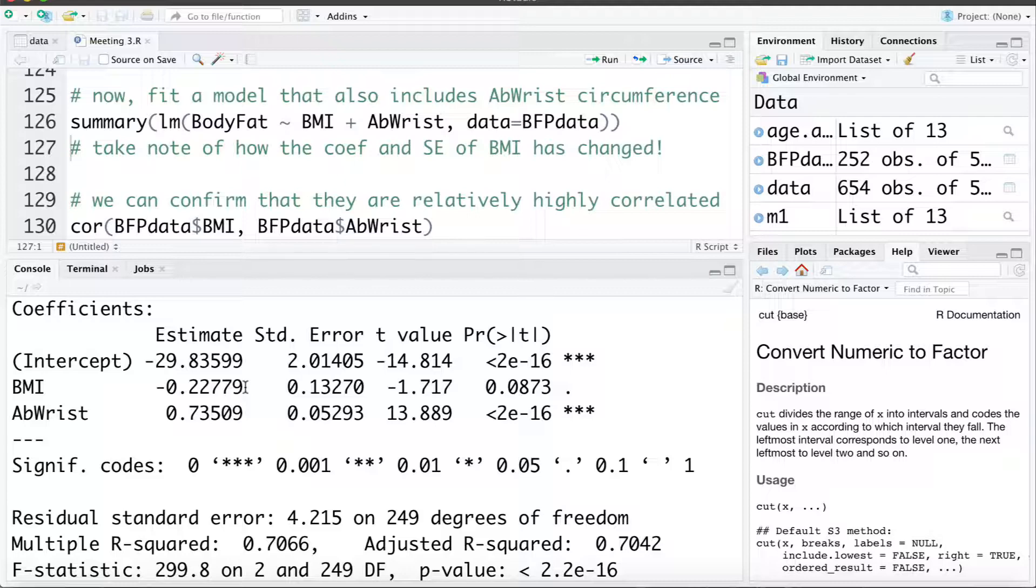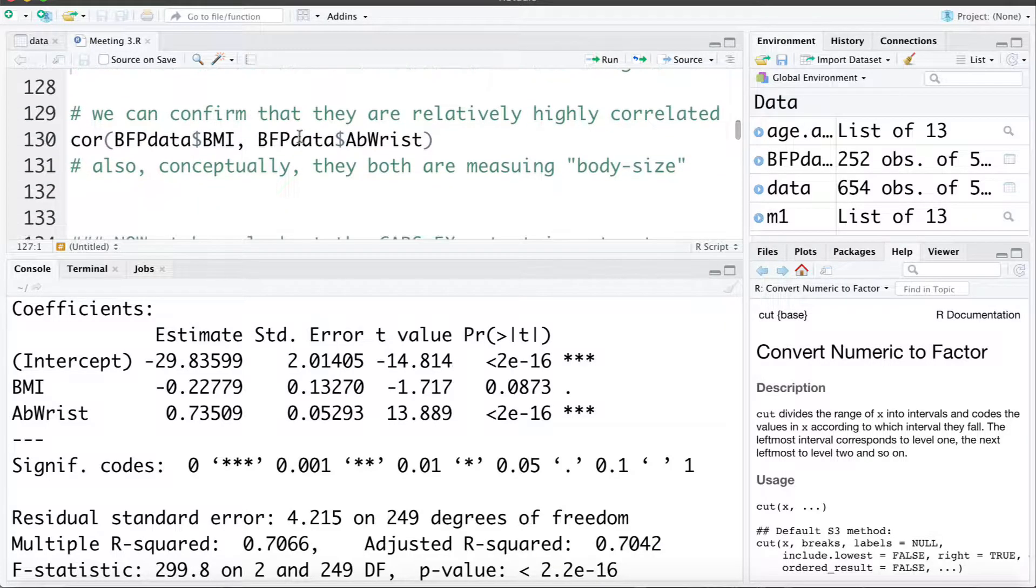So this is how we can see collinearity showing up numerically in a data set. It's important that we don't want to just check these numeric values and see our standard errors inflating, but does it make sense conceptually? And it definitely does for us here. It definitely does make sense conceptually that BMI and abris circumference are measuring the same thing, they're both measures of body size. And just to confirm that, let's look at the correlation between these two variables.